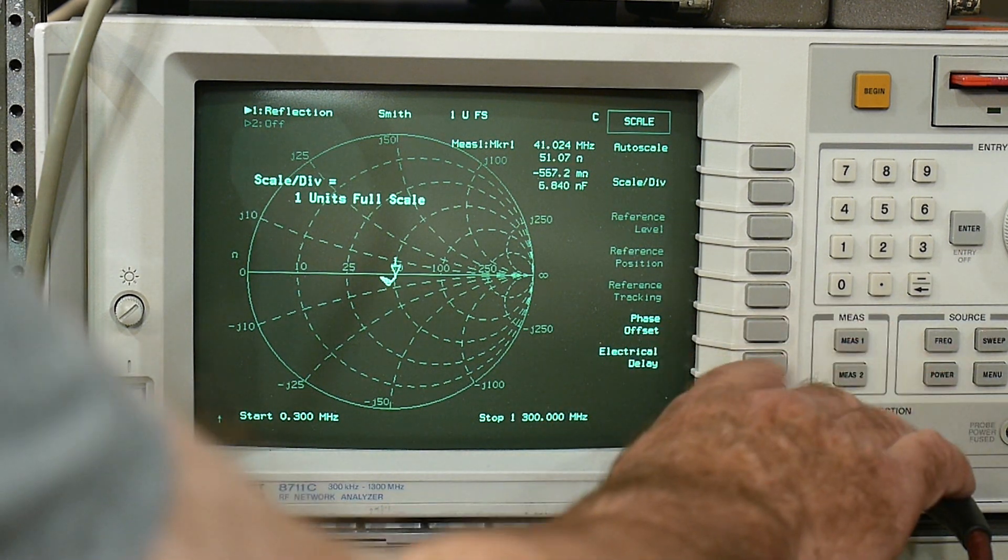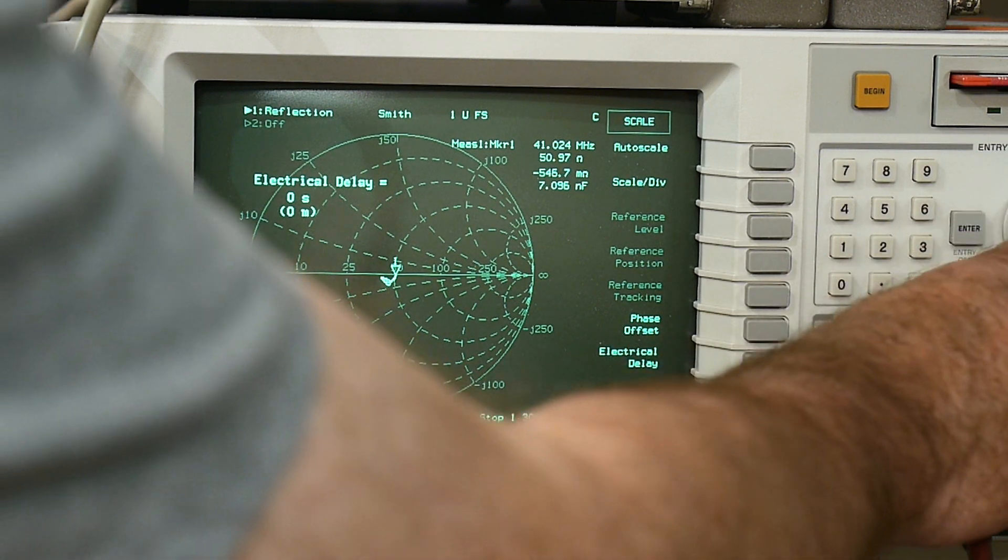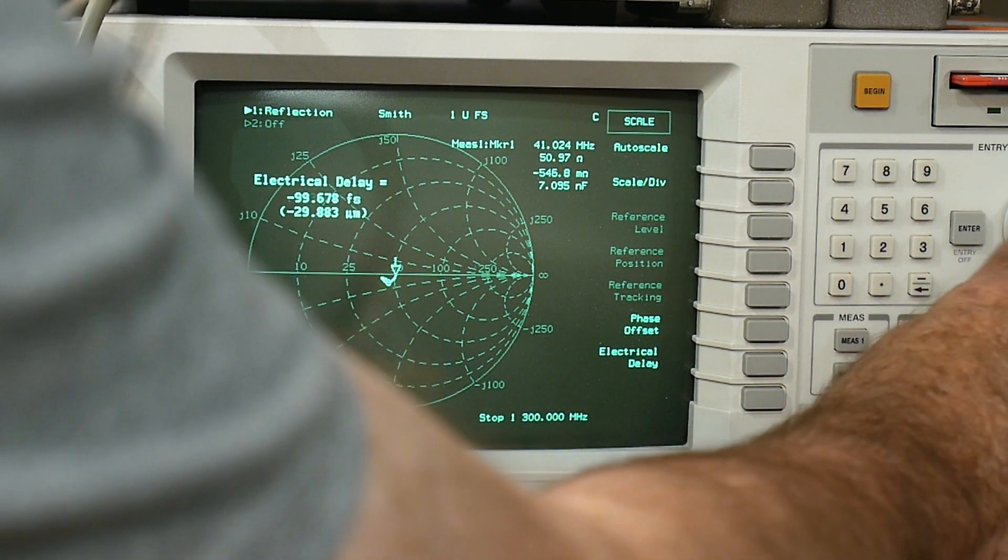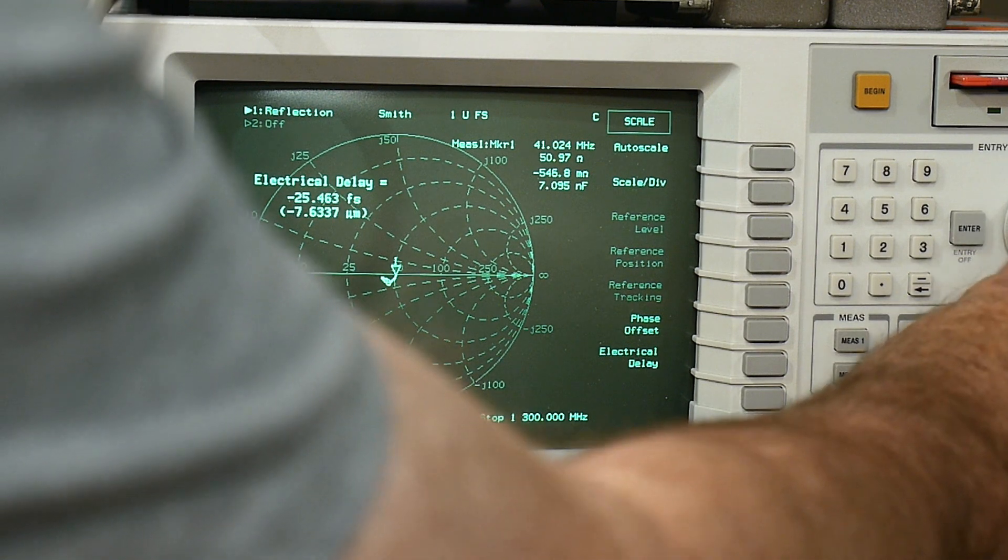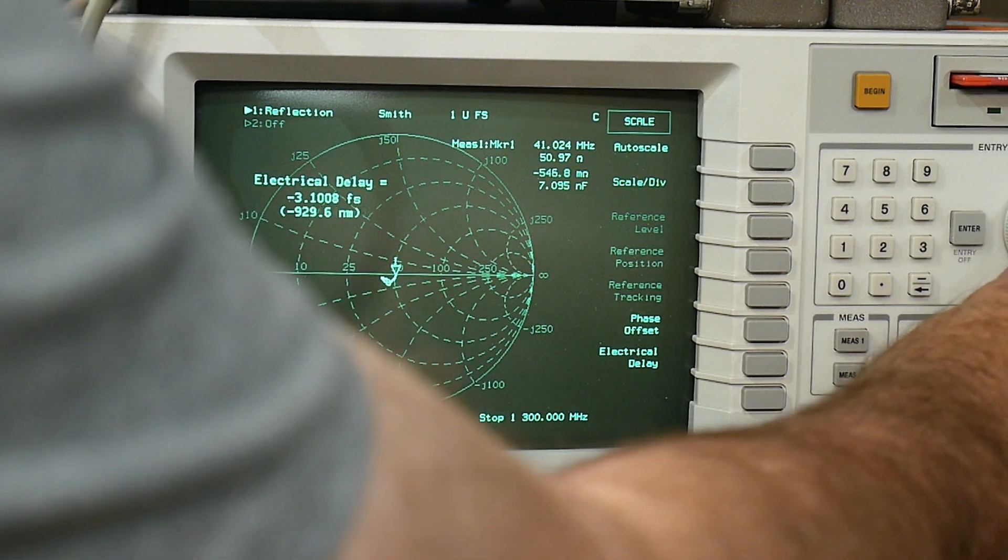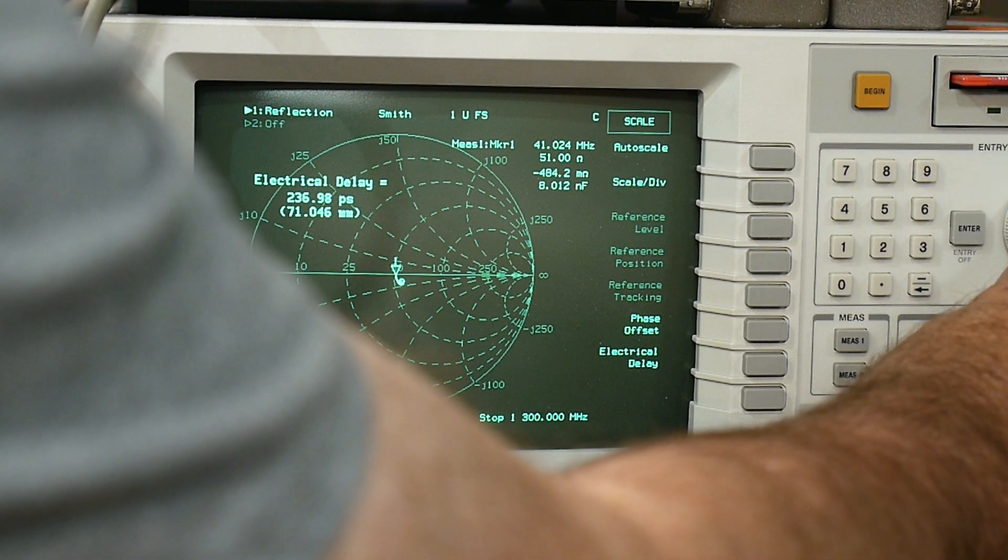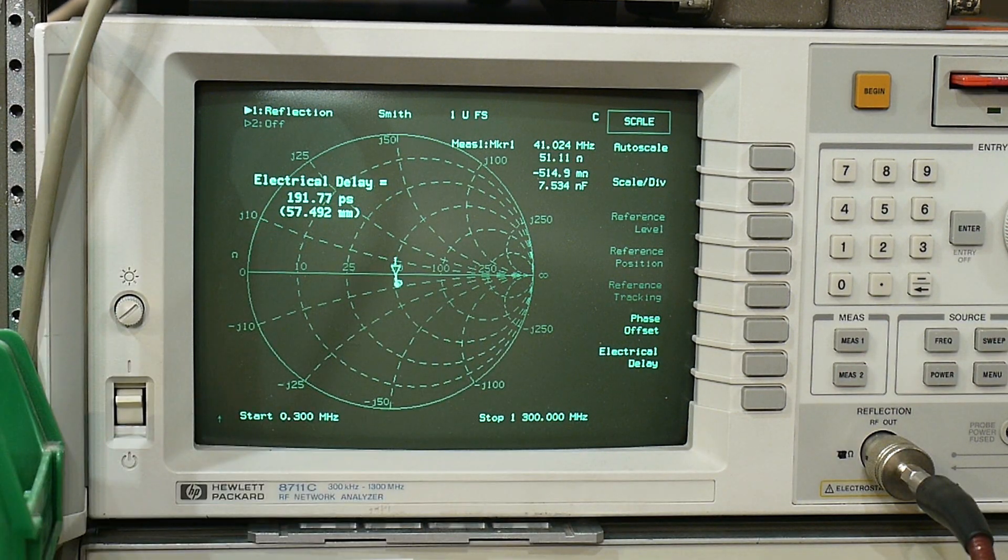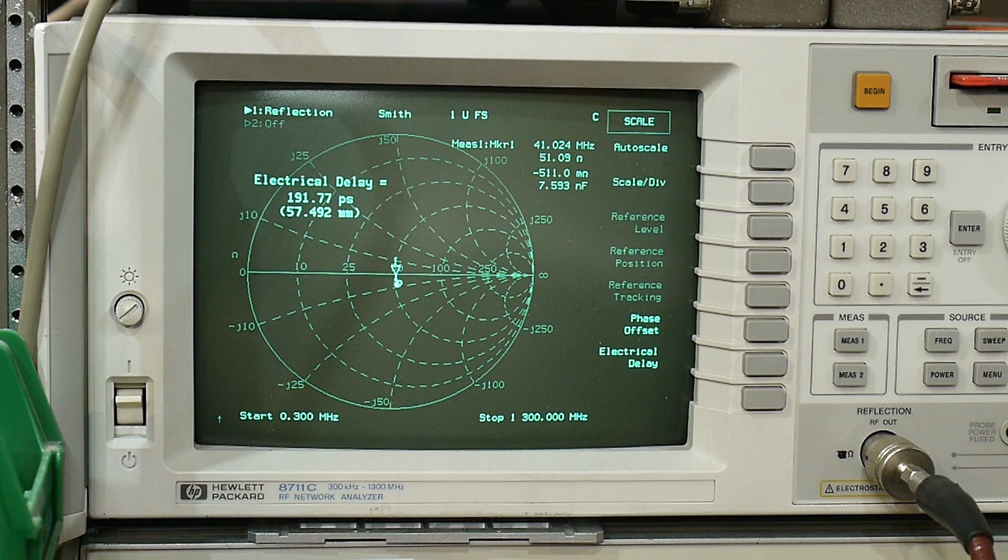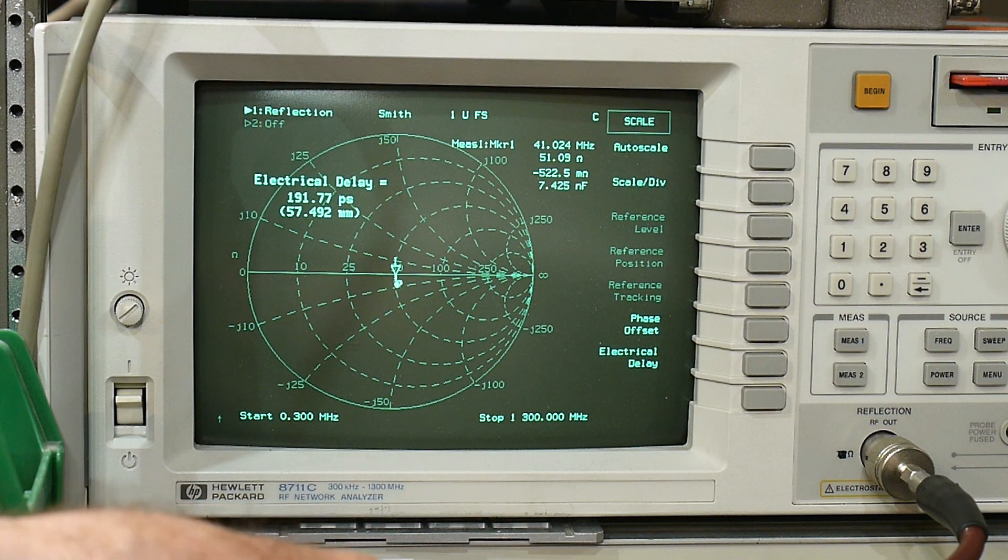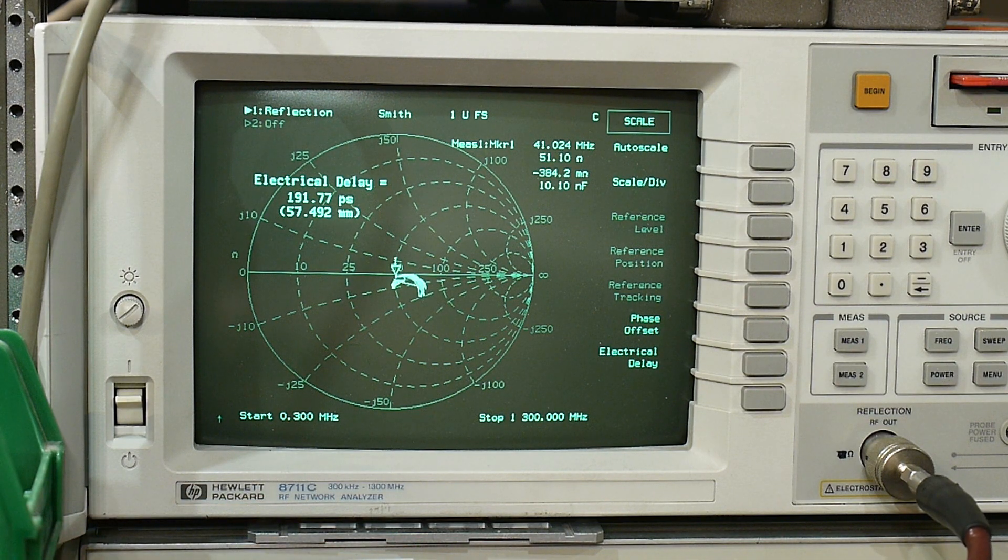Electrical delay is zero. We can set the electrical delay to offset that if we want. I think it was about 57 millimeters, something like that. Yeah, now it's completely on the 50 ohm line. It's no different at all.